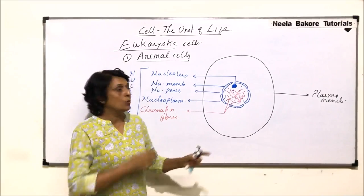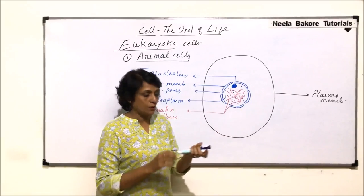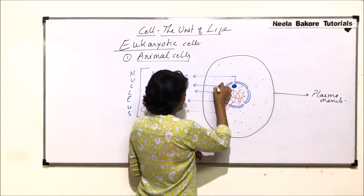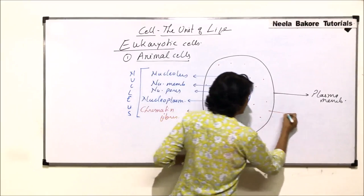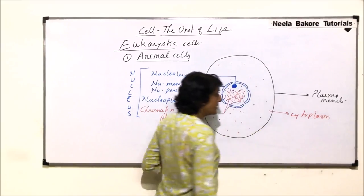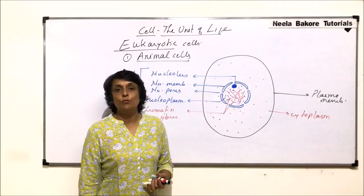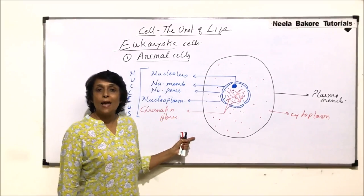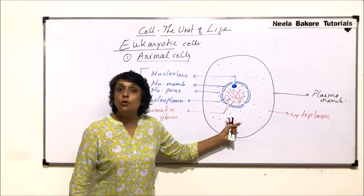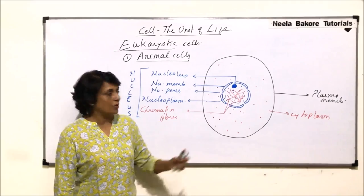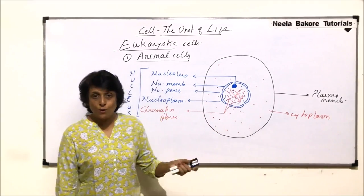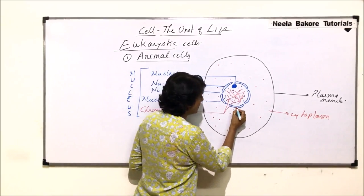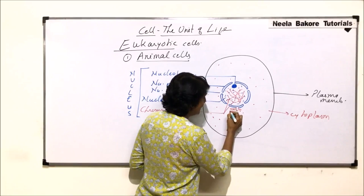The area between the plasma membrane and the nuclear membrane is filled with another jelly-like or gelatinous material called the cytoplasm. In the cytoplasm are present the membrane-bound structures known as organelles. In prokaryotic cells there are no membrane-bound structures, whereas in eukaryotic cells there are membrane-bound structures — the nucleus is also membrane-bound.